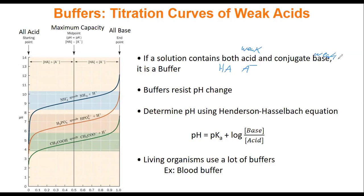What buffers do is that they will resist a pH change if you add a strong acid or base to them. And if we're working with a buffer system, we can determine the pH using the Henderson-Hasselbalch equation, where pH equals pKa plus the log of base divided by acid. This pKa is called the acid dissociation constant. Remember, every time you see 'p', you should think to yourself: minus log.